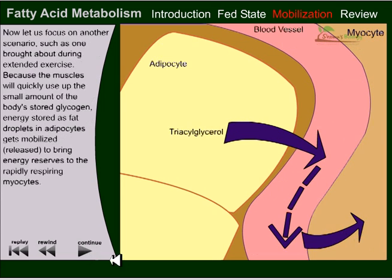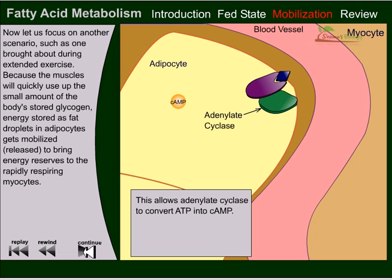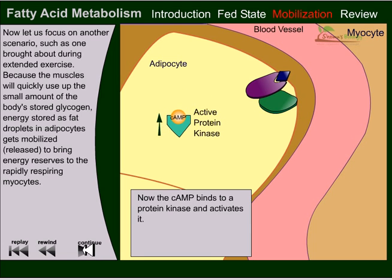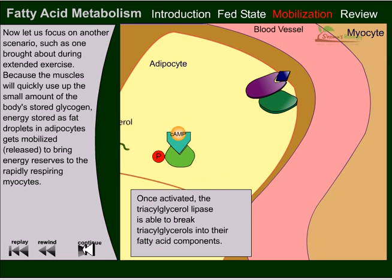Now let us focus on another scenario — one brought about during an extended exercise period. Because the muscles quickly use up all stored glycogen, energy stored as fat droplets in adipose tissues gets mobilized to bring energy to the rapidly respiring myocytes. The steps are: first, epinephrine or glucagon — both hormones — bind with receptor molecules on the cell membrane of the adipose fat cell. This allows adenylate cyclase to convert ATP into cyclic AMP. The cyclic AMP binds with protein kinase and activates it. The activated protein kinase then binds with triacylglycerol lipase, thereby activating it.